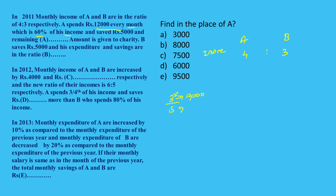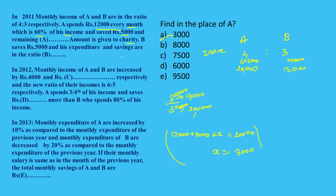In 2011, A's income is 20,000. A spends 12,000, saves 5,000, and the remaining amount is given to charity. So: 12,000 spent plus 5,000 saved equals 17,000. Income is 20,000 minus 17,000, so 3,000 goes to charity.